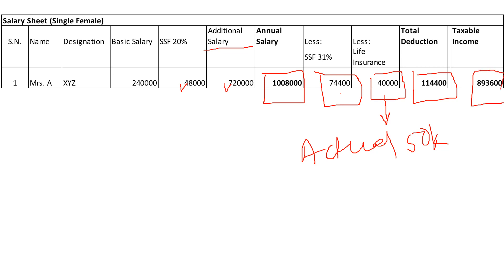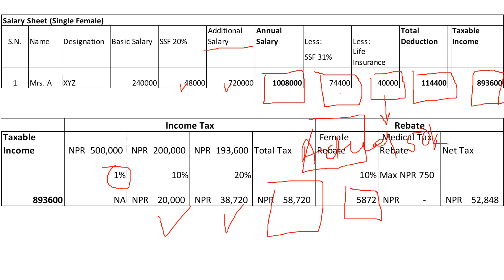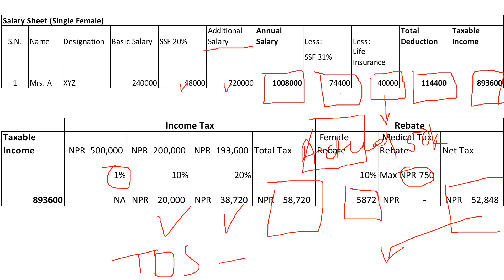The taxable income is eight lakh ninety-three thousand six hundred. Since you are already registered with SSF, you don't pay the one percent social security tax. You pay ten percent on two lakh, that is twenty thousand, and twenty percent on the remaining amount, that is thirty thousand seven hundred twenty. Total tax is fifty thousand seven hundred twenty. As a female employee, you can claim a ten percent rebate, which is five thousand seventy-two. No medical credit is provided in this case, though you can claim up to seven hundred fifty rupees. Net tax payable to the government is approximately fifty-two thousand eight hundred forty-eight. For monthly TDS, divide this amount by twelve.